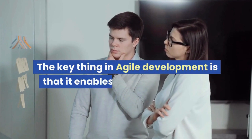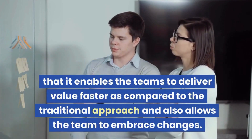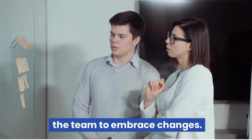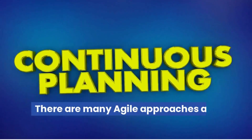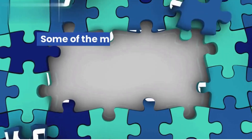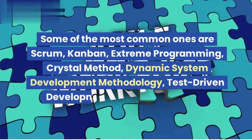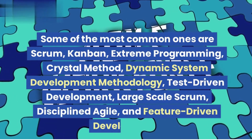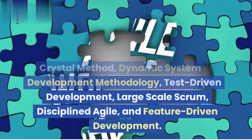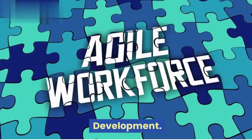The key thing in Agile development is that it enables teams to deliver value faster compared to the traditional approach and also allows the team to embrace changes. There are many Agile approaches and techniques which are used. Some of the most common ones are Scrum, Kanban, Extreme Programming, Crystal Method, Dynamic System Development Methodology, Test-Driven Development, Large-Scale Scrum, Disciplined Agile, and Feature-Driven Development.